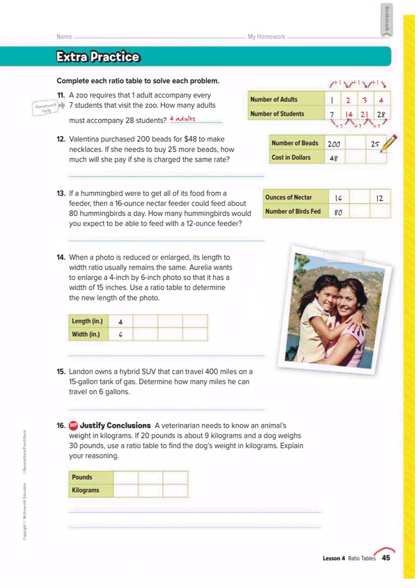So let's do two more examples. So we're going to go to page 45. Let's do number 13. It says, if a hummingbird were to get all of its food from a feeder, then a 16 ounce nectar feeder could feed about 80 hummingbirds a day. How many hummingbirds would you expect to be able to feed with a 12 ounce feeder?